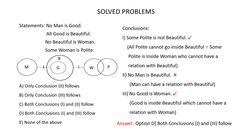Conclusion 2: No man is beautiful. Man cannot have any relation with good, so man cannot have any relation with the part of beautiful which is good. But there is no restriction for man to have a relation with this other part of beautiful. So man can have a relation with this part of beautiful — you cannot say no man is beautiful. The conclusion no man is beautiful is wrong. Conclusion 2 does not follow.